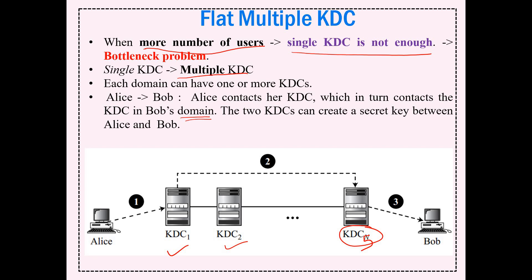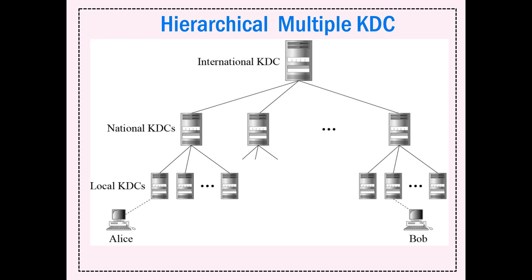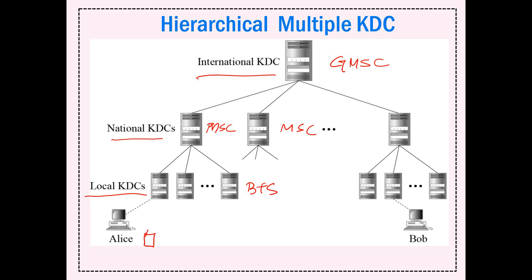The Diffie-Hellman key exchange is a process where no KDCs are involved - it is a direct exchange. There is also an international KDC structure - like a supercomputer controlling national KDCs and local KDCs. In mobile communication this is analogous to GMSC (gateway mobile switching center), MSCs, BTSs, and devices. One request goes to another, one after the other. This is basically the process involved with KDC.